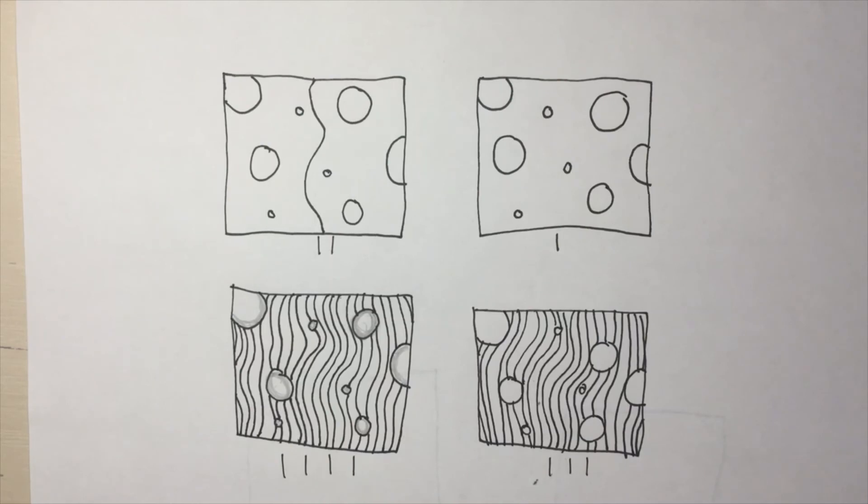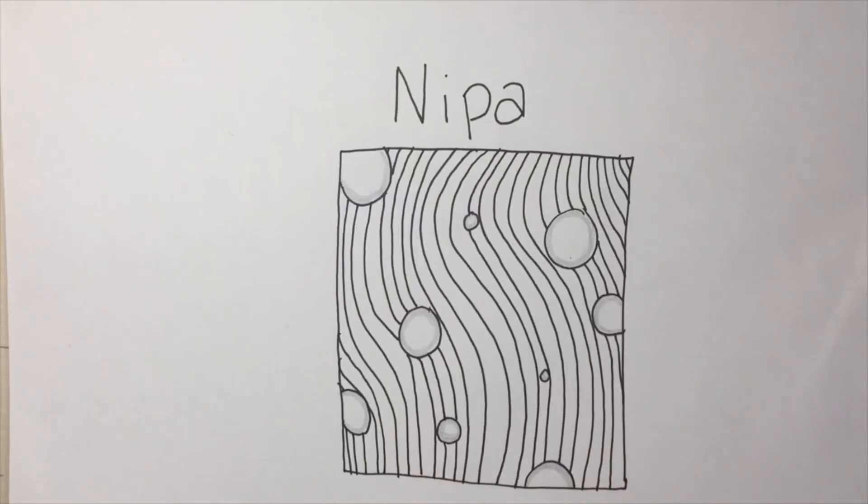Alright, I'm all done shading my circles. I made it extra dark so the camera could see it. That wraps up my tutorial on how to make the Zentangle Nippa. I hope you enjoyed. Bye!